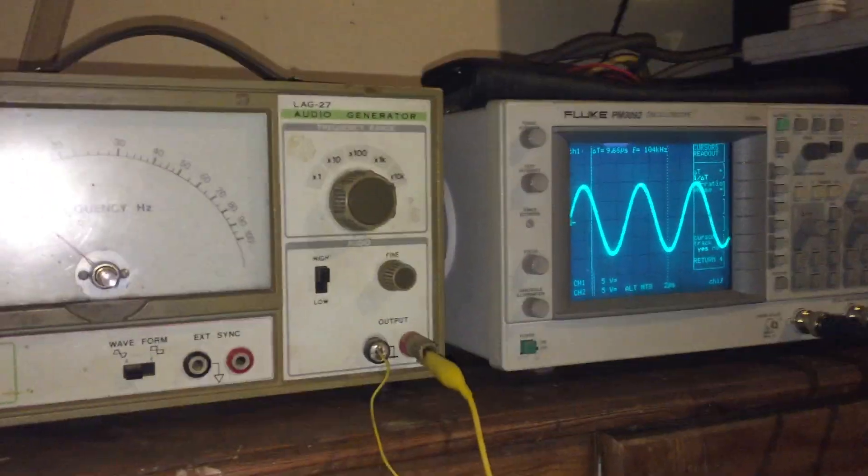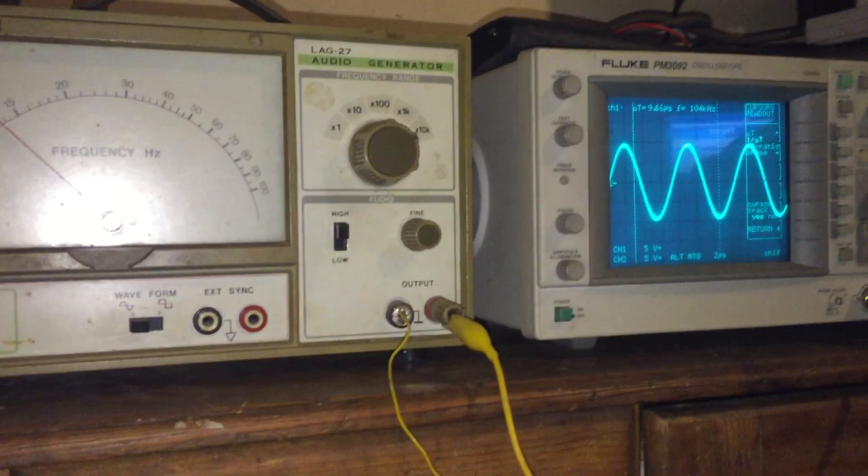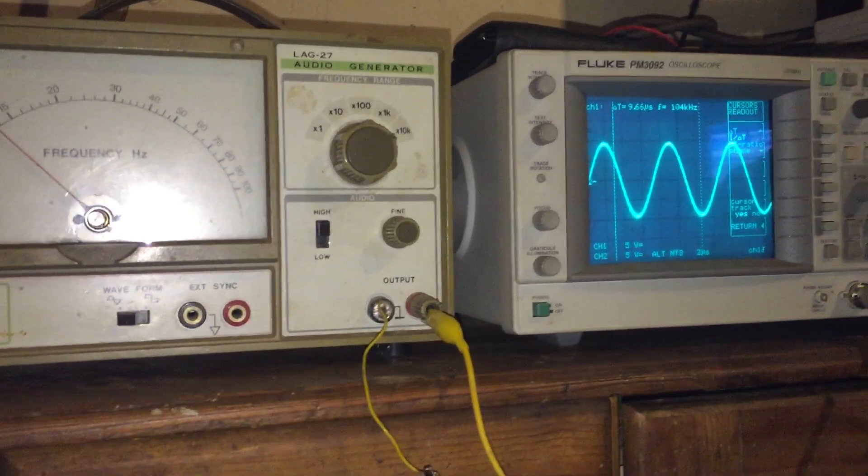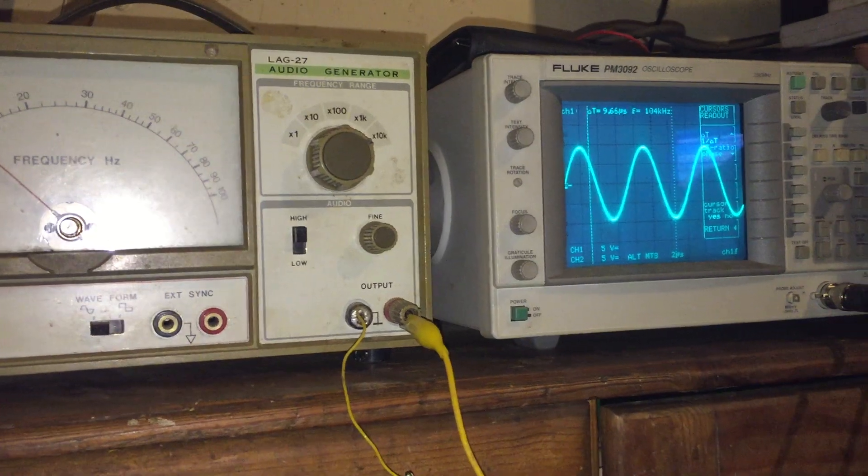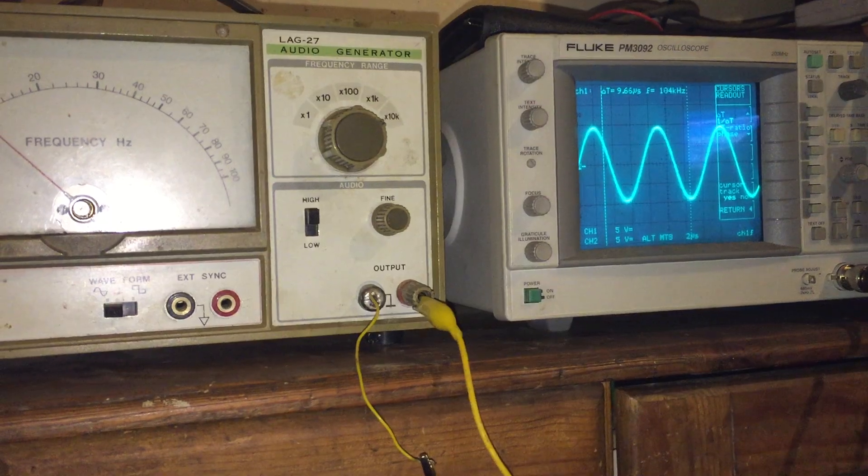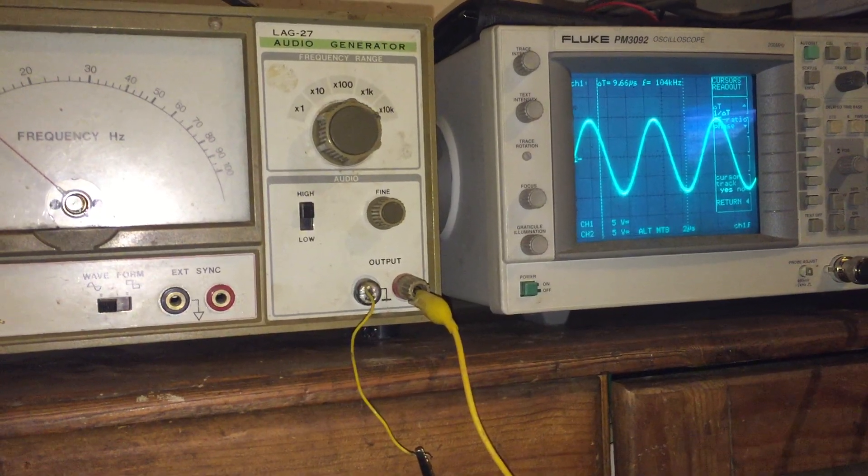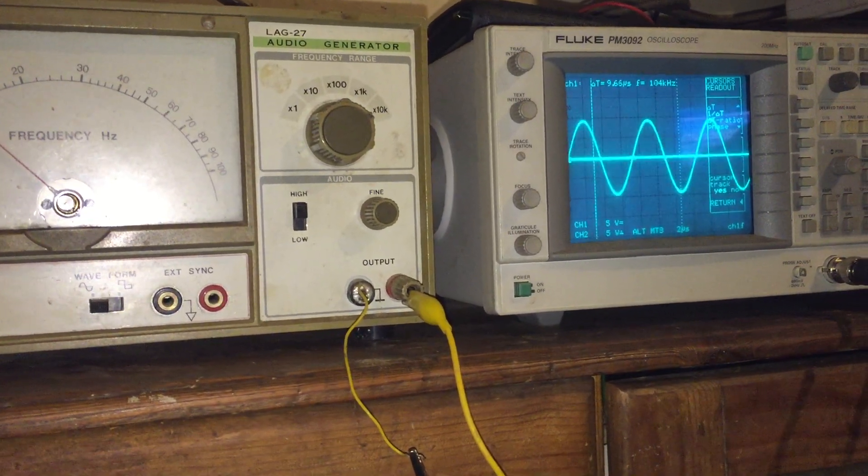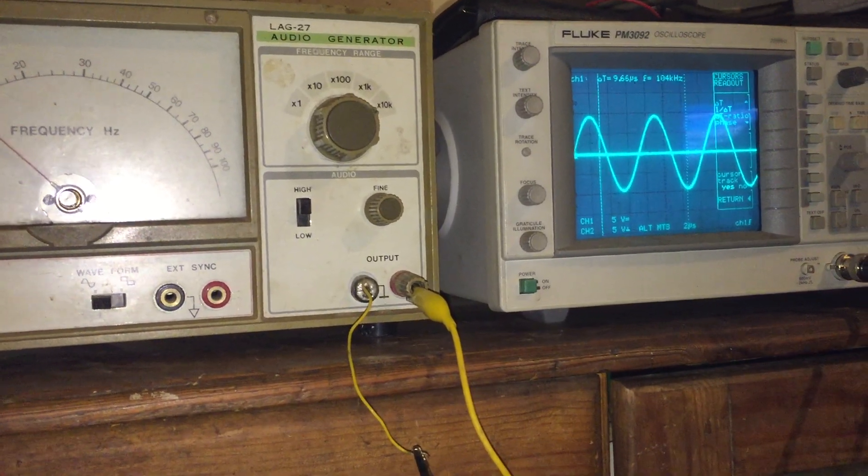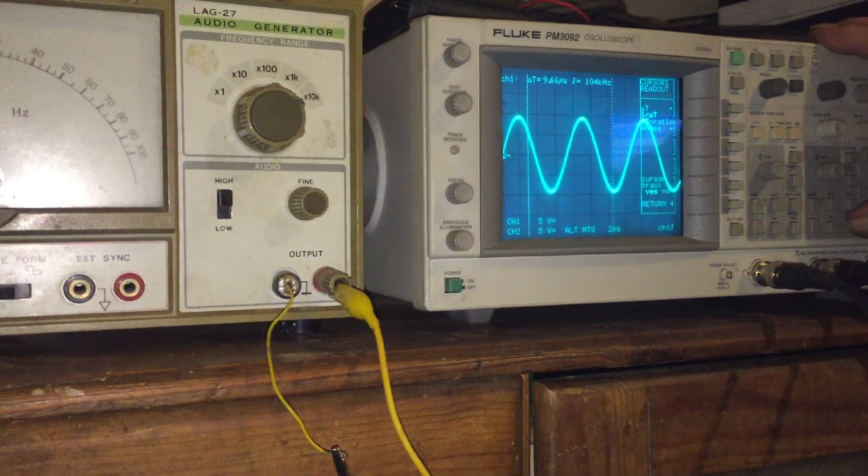Just using DC coupling as well. There you go, that's grounded channel two. Go back to DC coupling.